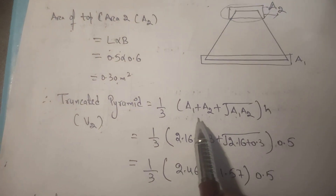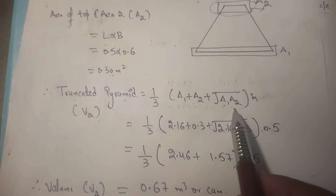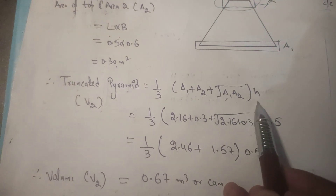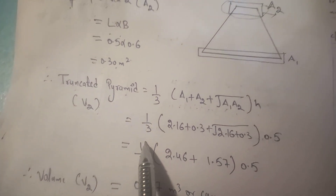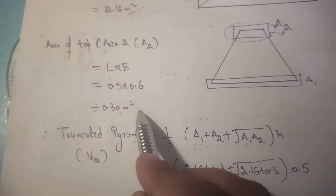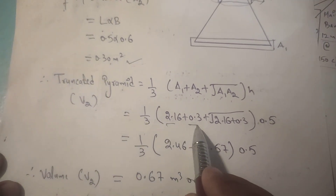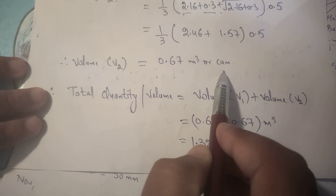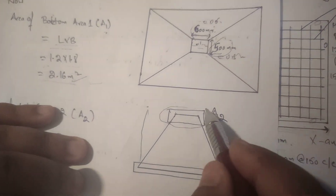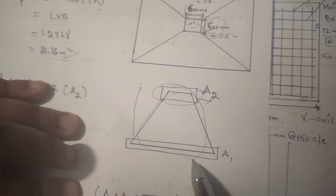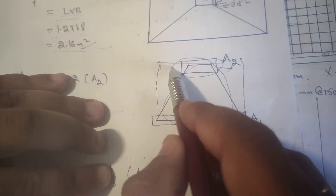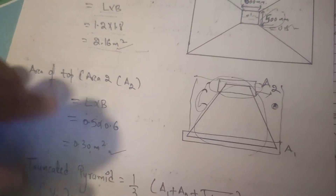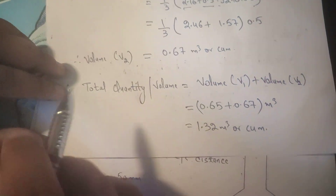Now applying the truncated pyramid formula: Volume = (1/3) × (A1 + A2 + √(A1 × A2)) × height = (1/3) × (2.16 + 0.30 + √(2.16 × 0.30)) × 0.5. The volume comes out to 0.67 cubic meters. When we take the area of this portion, the overlapping areas are automatically deducted.